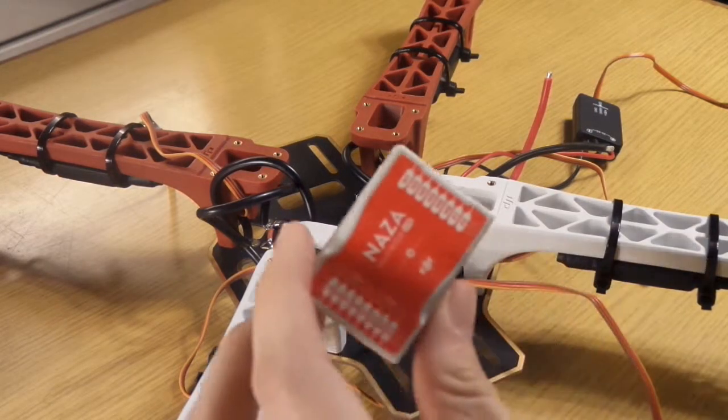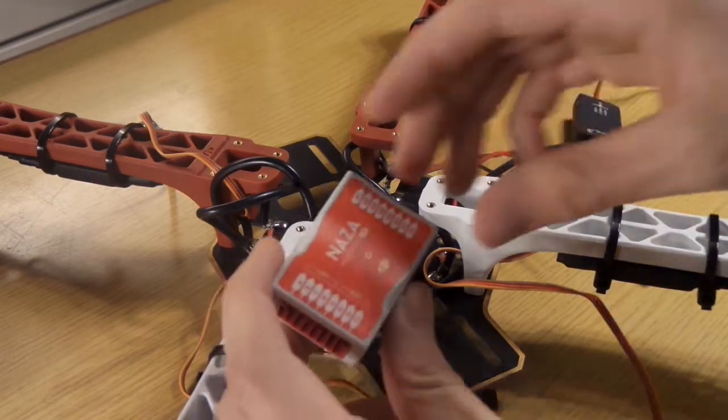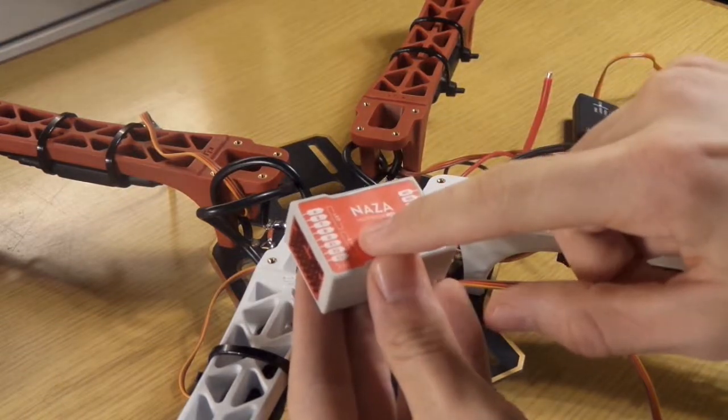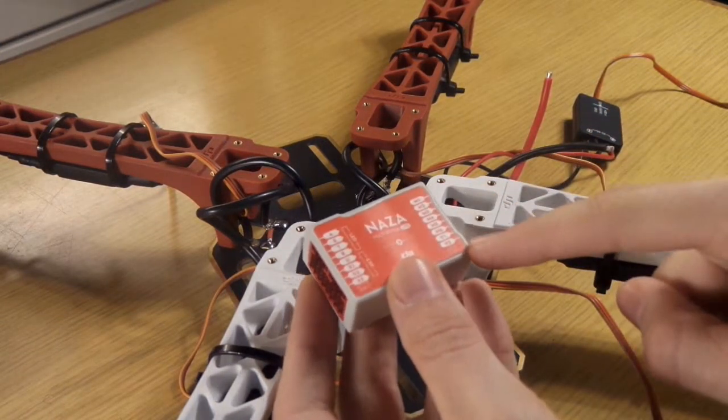Here we have the NASA M flight controller. On this side we have the attachment for the cables to the receiver, and on the other side we have the attachment to the motors.